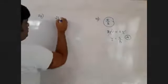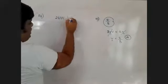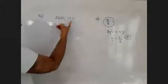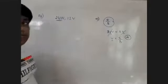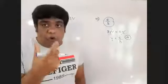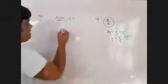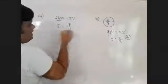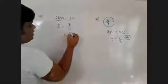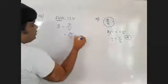From the specification, 24 watts and 12 volts. Using power divided by voltage to find current: I equals P over V, which is 24 divided by 12, equals 2 ampere current.